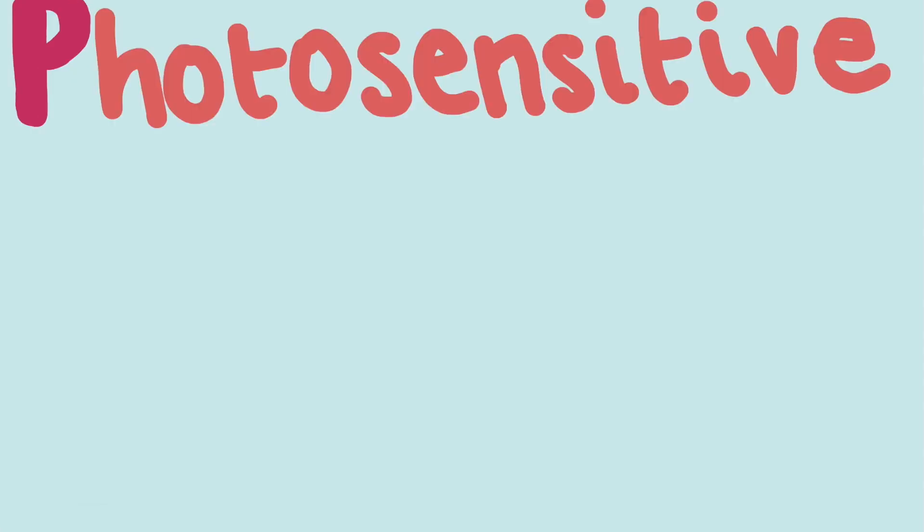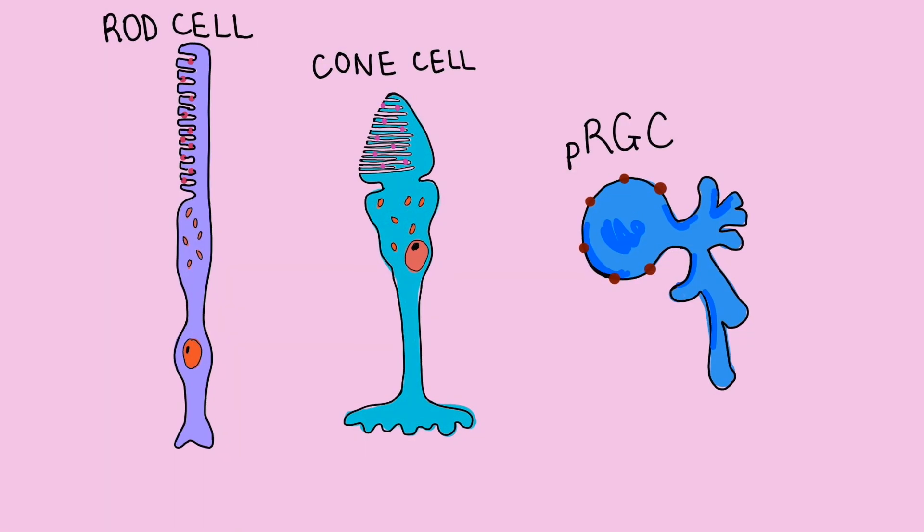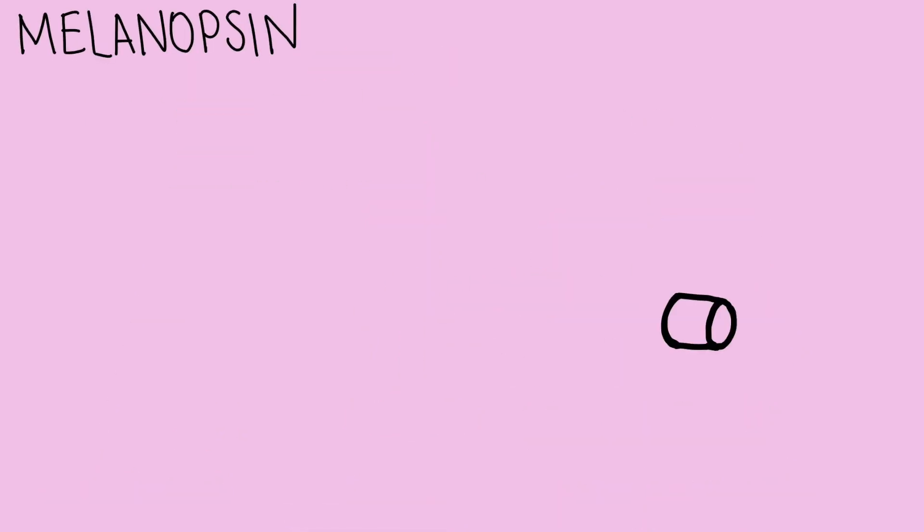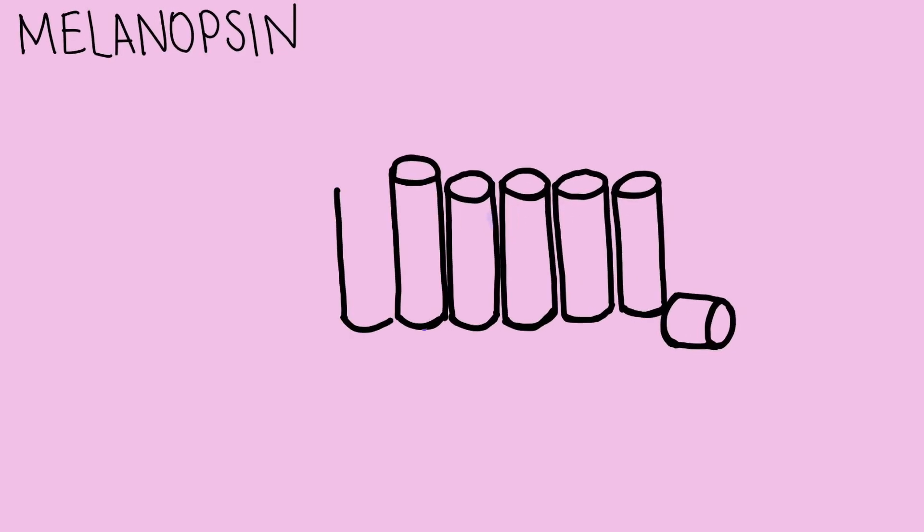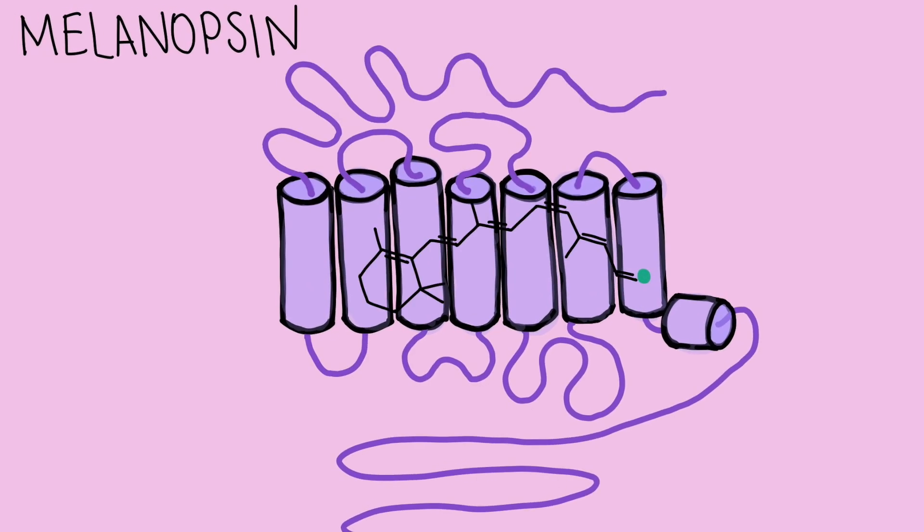These are photosensitive retinal ganglion cells. These contain a different photoreceptor than the other light sensitive cells in the retina called melanopsin. Melanopsin is a protein receptor that sits across the cell membrane and contains a pigment that is sensitive to light energy.